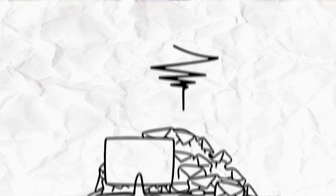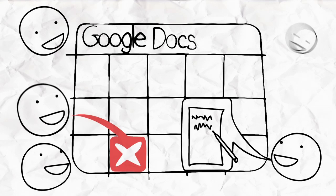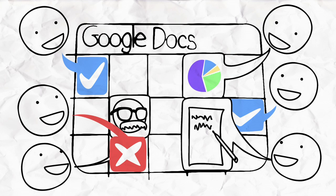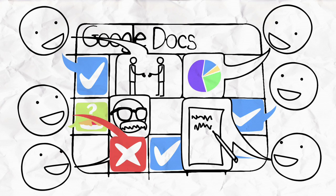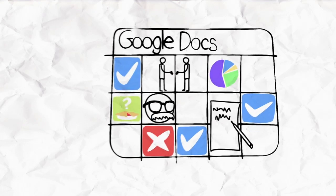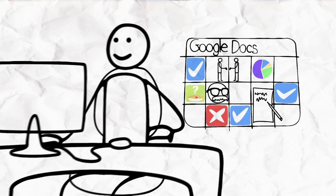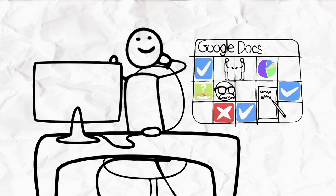Or you could use an online spreadsheet from Google and make people enter their own information in a single online copy of the document. There's no email overload, no network drive headaches, and no busy work for you.